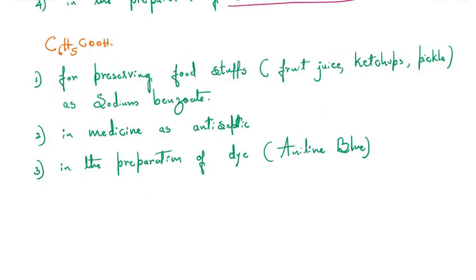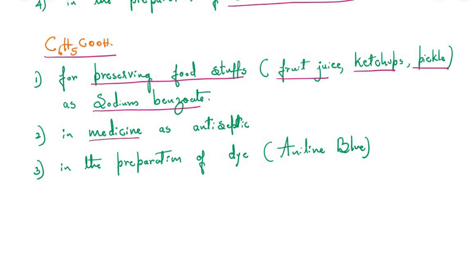Benzoic acid is used for preserving foodstuffs as sodium benzoate in fruit juices, ketchups, and pickles; as an antiseptic agent in medicine; and in the preparation of the dye aniline blue. This concludes the last part of the topic on aldehydes, ketones, and carboxylic acids. Thank you for watching — please like, share, and subscribe.